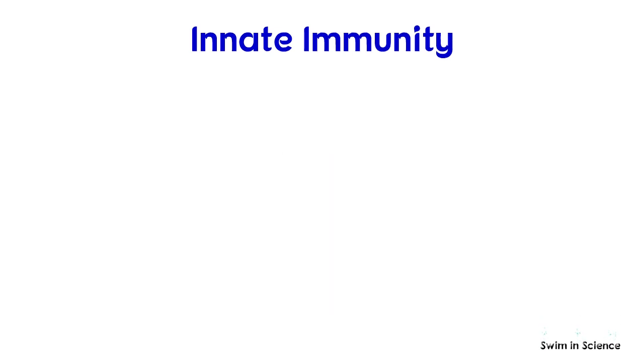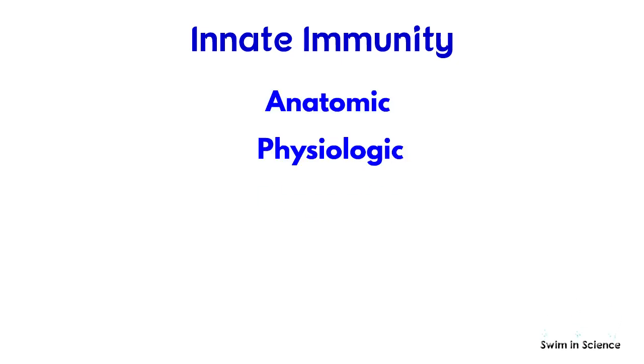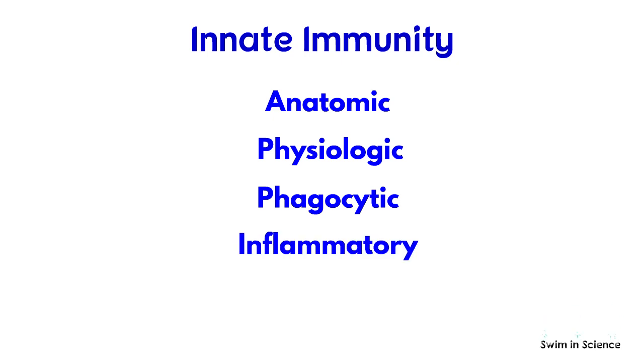Innate immunity is comprised of four types of defensive barriers. They are anatomic, physiologic, phagocytic, and inflammatory.